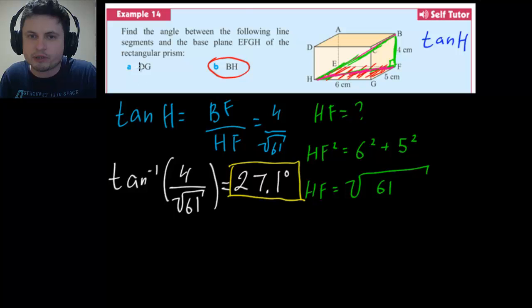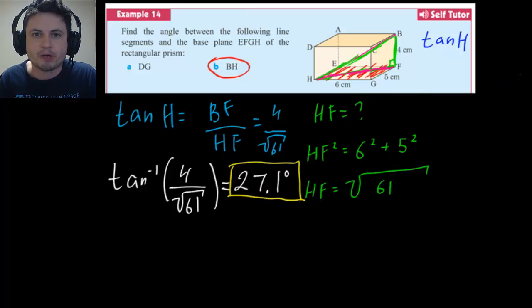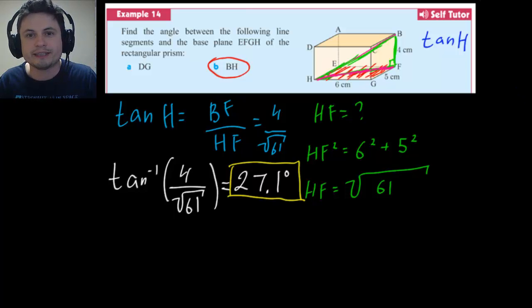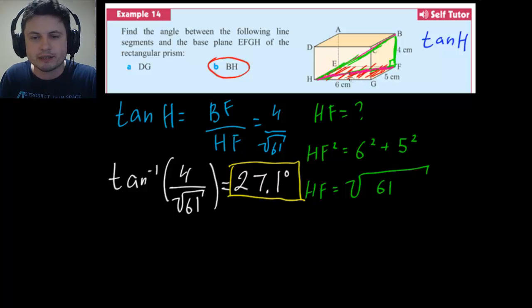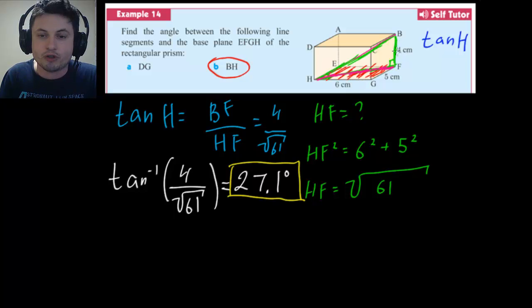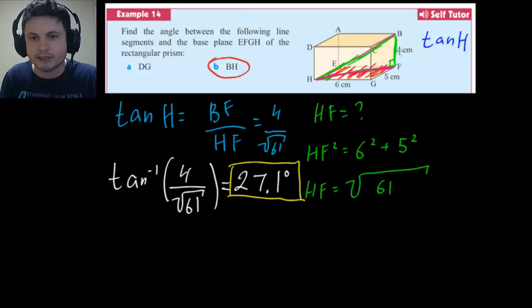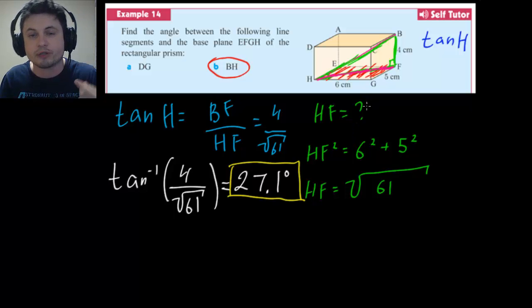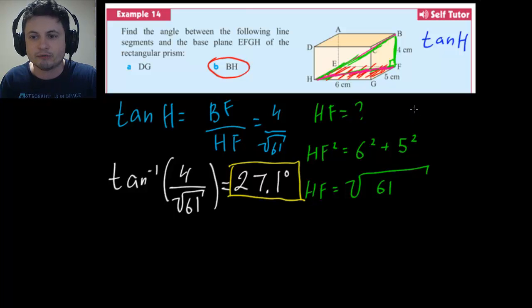Try DG yourself — it's a bit easier since all the values are already given. The essence of solving 3D problems is always: step one, identify the right triangle; step two, find at least two sides so you can use sine, cosine, or tangent; step three, use inverse sine, cosine, or tangent to find a missing angle, or use the regular trig ratios if you're given an angle and need to find a missing side.